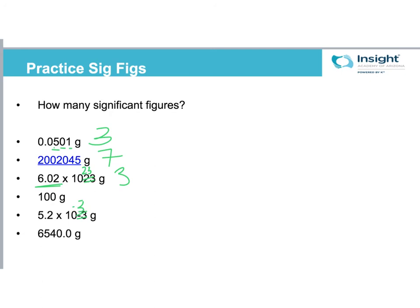All right, so the next one, 100. So the one definitely counts. The zeros falling to the right are significant only if a decimal is present, and there's no decimal present. So there's only one sig fig here. Scientific notation, everything should be significant, 5.2. So there's two sig figs there. And last one. So we've got zeros to the right, which are only significant if the decimal is present. There is a decimal present. So I'm going to include those, and there's a total of five in the last one.